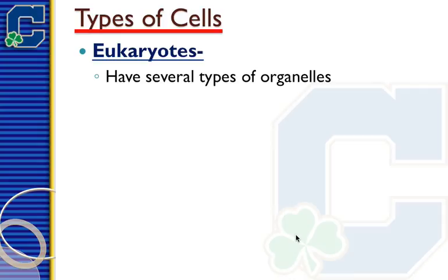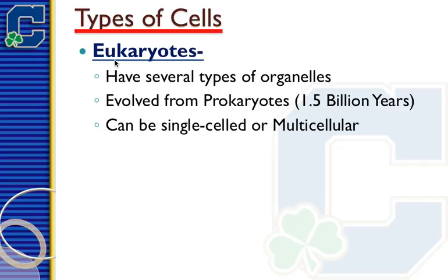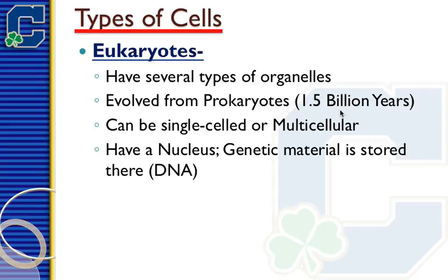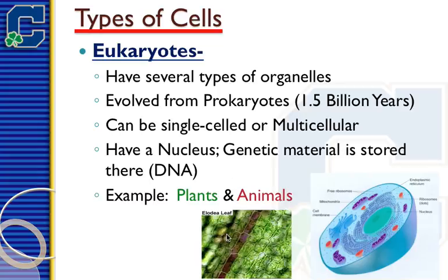Eukaryotes are the modern versions of cells — these are what you and I are made of. They have several types of organelles which perform specific functions inside of them. They evolved from prokaryotes about 1.5 billion years ago and could be single-celled or multicellular. Amoebas are an example of a single-celled eukaryote; you are an example of a multicellular eukaryote. They have a nucleus where their DNA is stored. Examples include plants and animal cells. If you see a nucleus, you know it has to be a eukaryote.